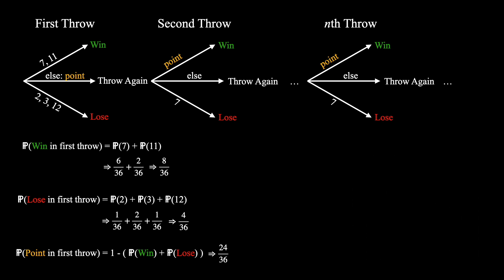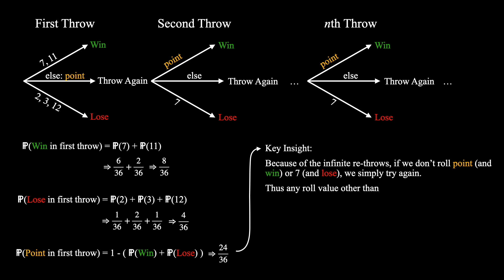Now let's move on to try to analyze the case where we get a point in our first throw and have to move on to the second throw and further. A key insight we can make is that because we have an infinite number of re-throws, if we don't roll a point and win or roll a 7 and immediately lose, we can simply try again from the second throw onwards. Thus, any roll value other than point or 7 has no actual impact on our winning chances.